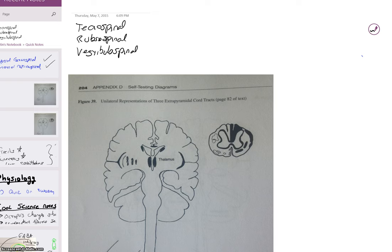The tectospinal, the rubrospinal, and the vestibulospinal. These are the big three extrapyramidal fibers. They're still upper motor neurons because they still start in the brain, still end in the spinal cord.